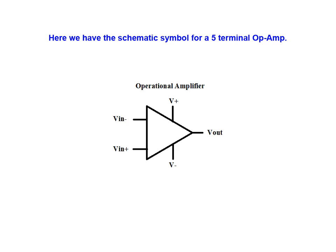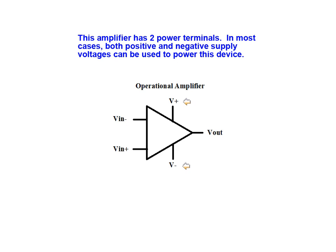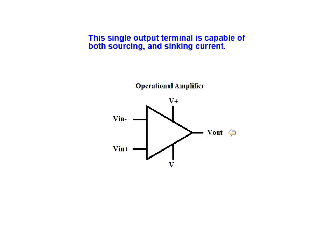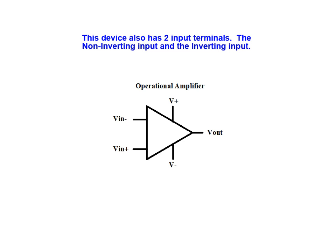Here we have the schematic symbol for a five terminal op amp. This amplifier has two power terminals. In most cases both positive and negative supply voltages can be used to power this device. The single output terminal is capable of both sourcing and sinking current. This device also has two input terminals.